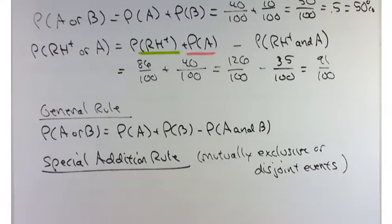Mutually exclusive or disjoint events are events that cannot happen at the same time. You can't vote Republican and Democrat for one office at the same time. You have to choose one or the other.